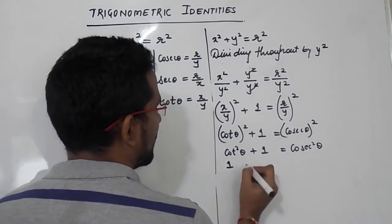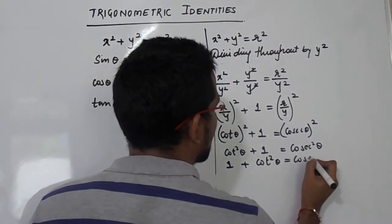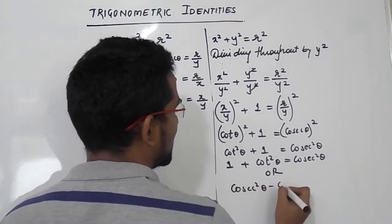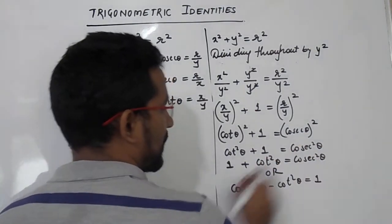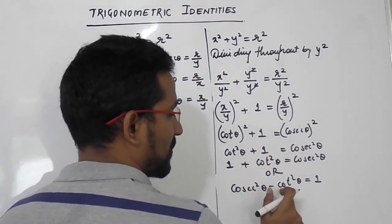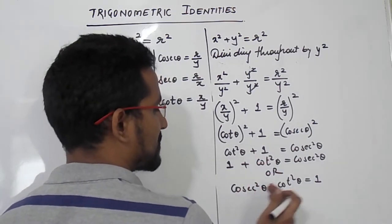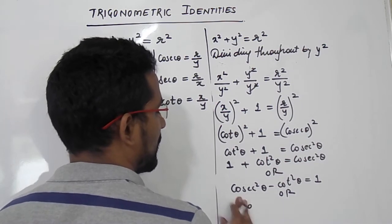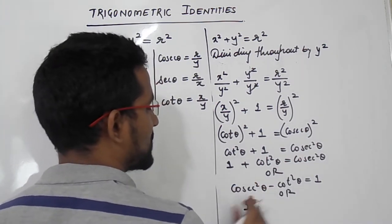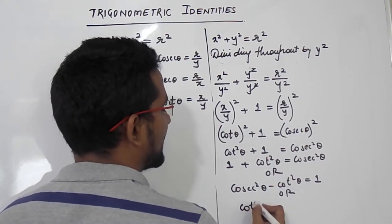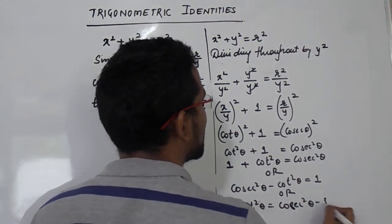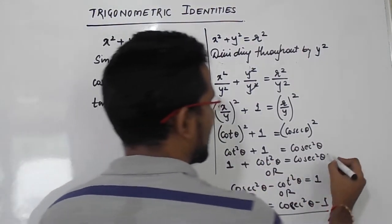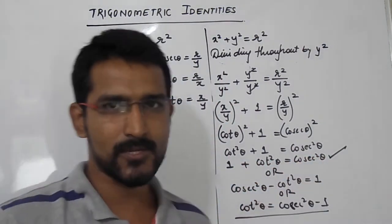We can write this as 1 + cot²θ = cosec²θ. Shifting cot²θ to the right gives cosec²θ − cot²θ = 1. We can also express it as cot²θ = cosec²θ − 1. So this is the third important identity: 1 + cot²θ = cosec²θ.